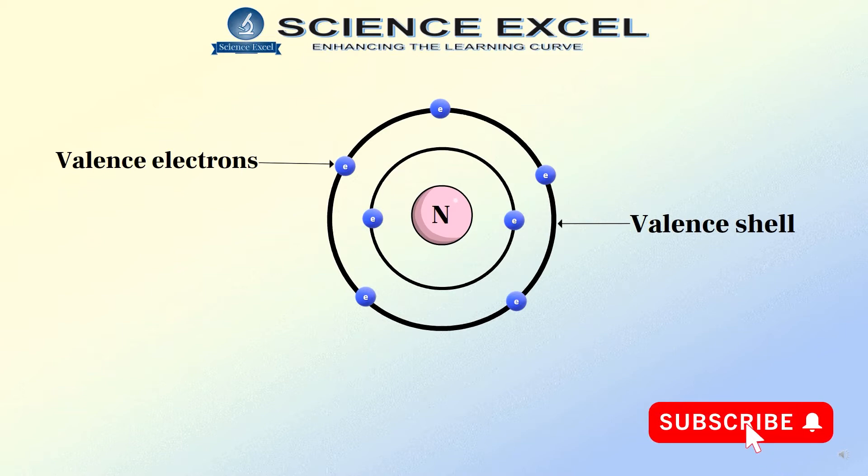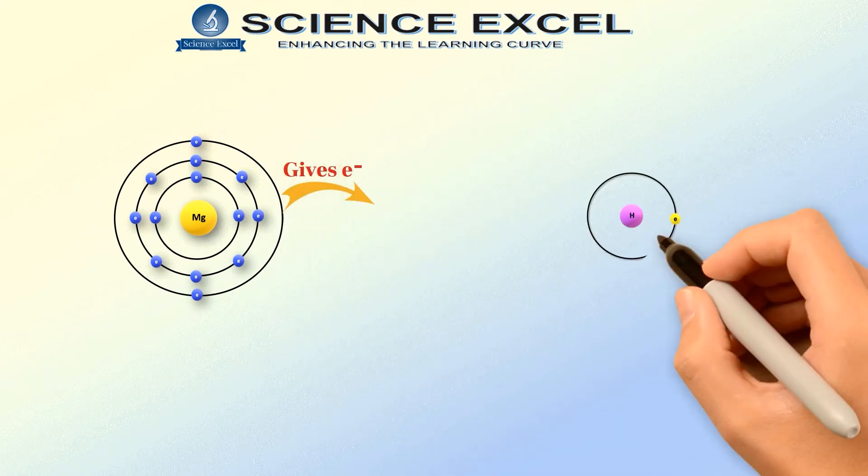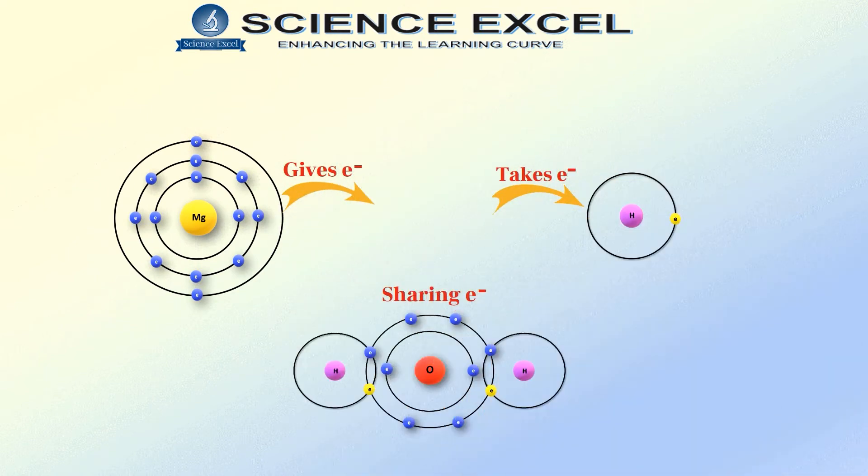So, how do atoms of elements attain a stable state? Let us explore. This is achieved either by giving electrons, taking electrons, or sharing of electrons with other atoms of the same element or another element.